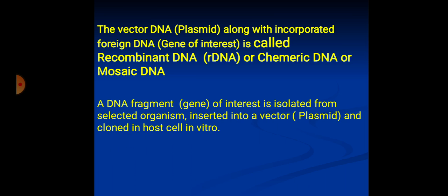Vector DNA, along with the incorporated foreign DNA segment — the gene of interest — is called recombinant DNA, or chimeric DNA, or mosaic DNA.